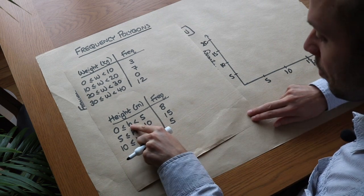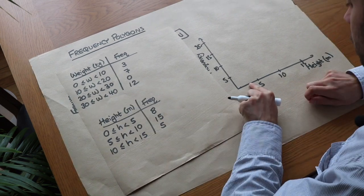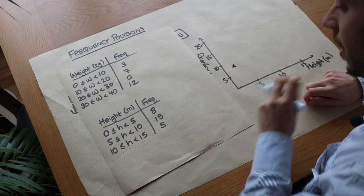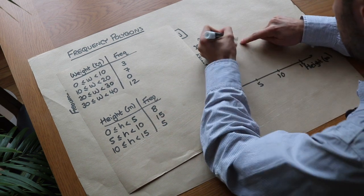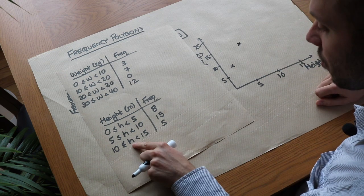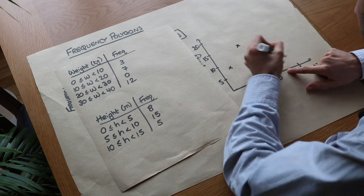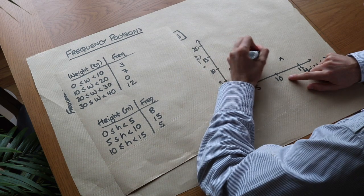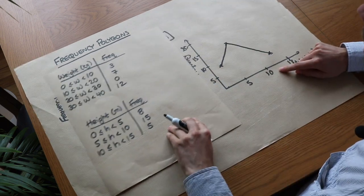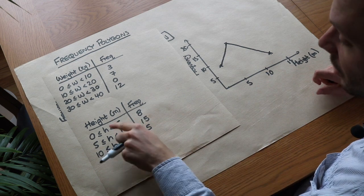So we plot the midpoint 2.5 with 8, we plot the midpoint here 7.5 with 15, and 12.5 with 5. And then we join them up dot to dot with lines like that—it's kind of like a mountain range. Another mistake the students make is that they don't use the midpoint.